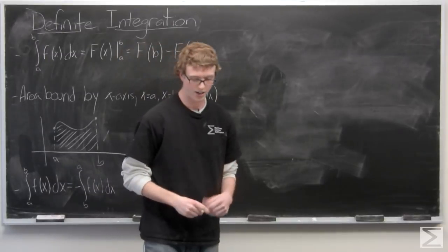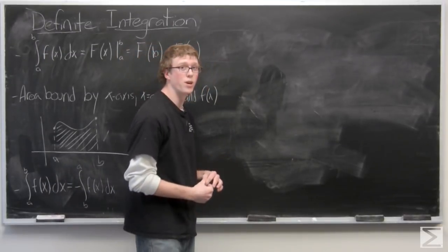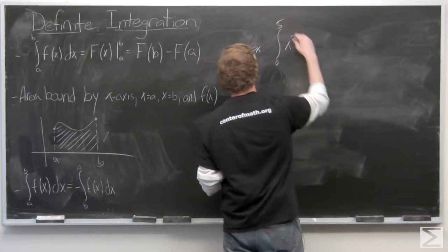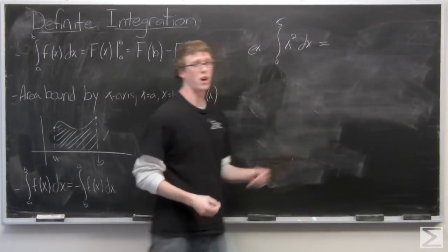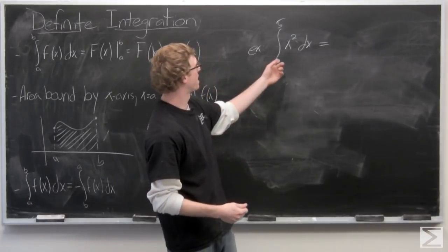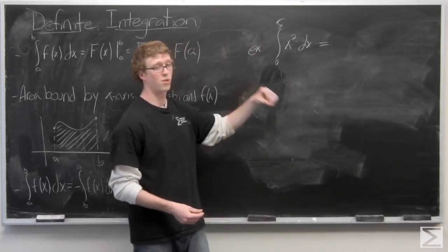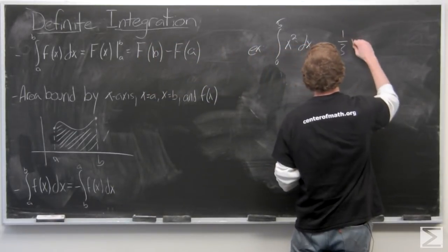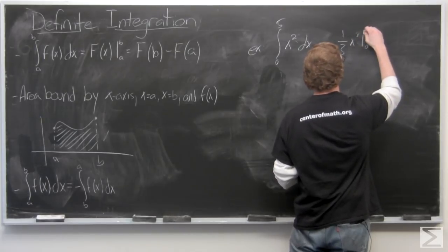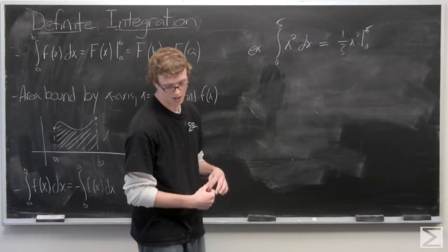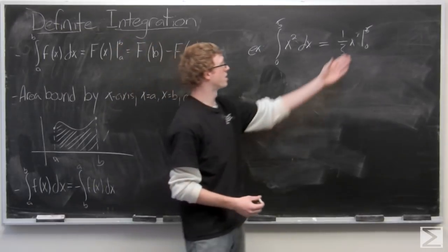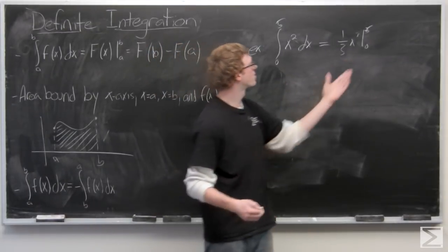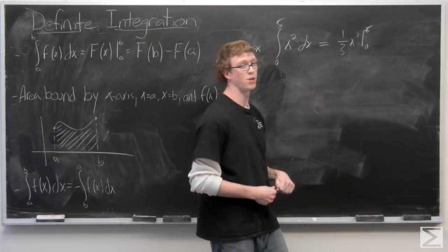Now we're going to take a look at just a couple more examples. Let's integrate x squared from 0 to 5. We need to use our power rule for antiderivatives here. The antiderivative of x squared is x to the 2 plus 1, which is x cubed, all over 2 plus 1, which is 3. So we have 1 third x cubed from 0 to 5. All we need to do here is just plug in the 5 because we know when we're subtracting f of 0, that's just going to be 0. So f of 5 is 5 cubed, 125 over 3.